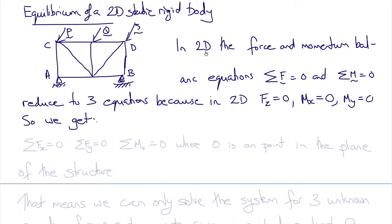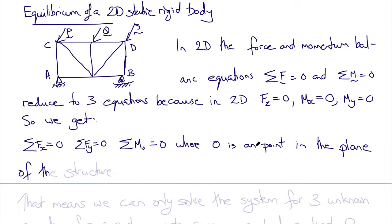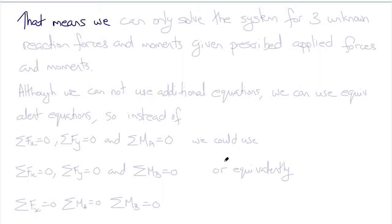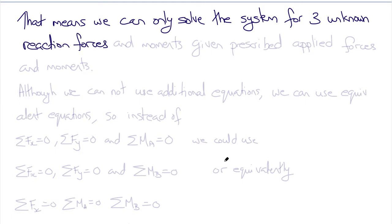The force and moment balance equations for static equilibrium in two dimensions reduce to: the sum of X forces equals zero, the sum of Y forces equals zero, and the sum of moments about a point O equals zero, where O is any point on the plane of the structure. This means we can only solve the system for three unknown reaction forces and moments, given prescribed applied forces and moments and the known geometry.